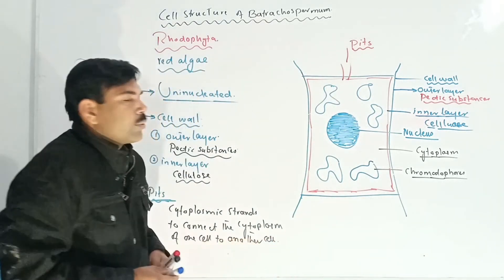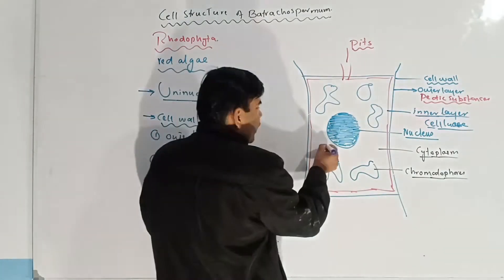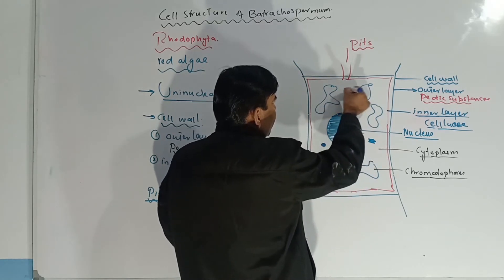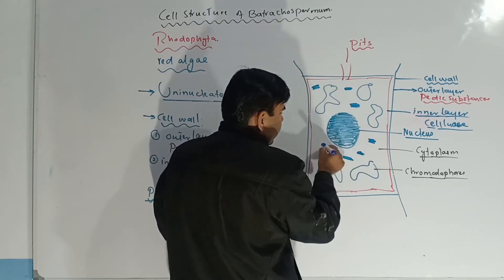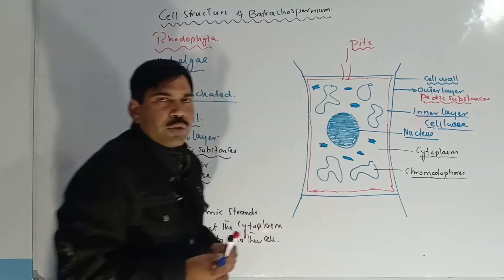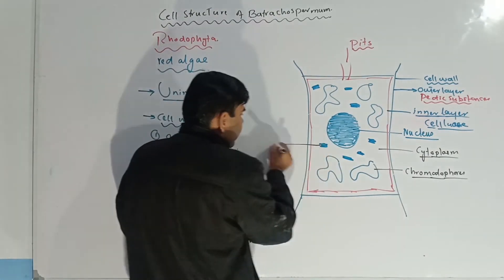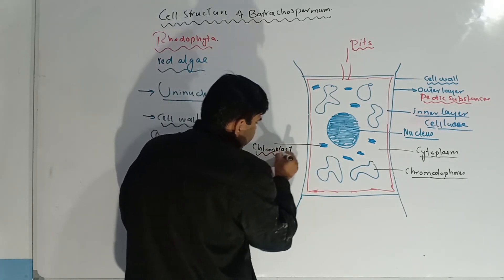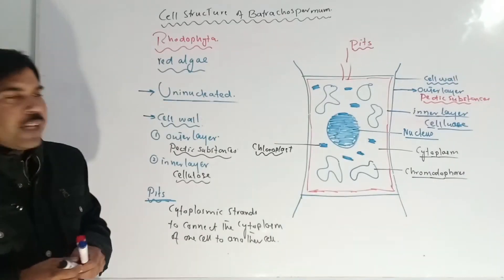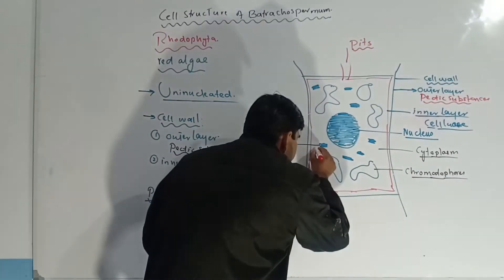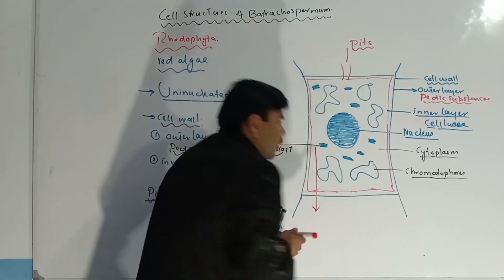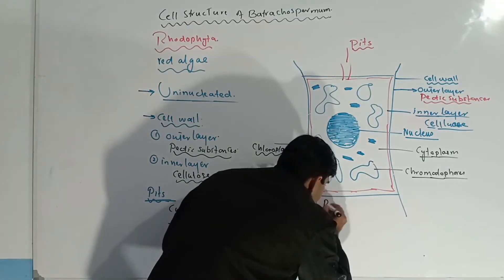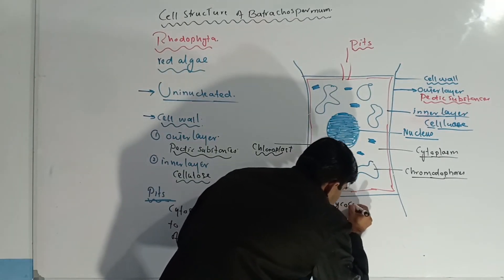Now we are going to discuss about the pigments — which type of pigments are present. These are the chloroplasts which are present inside the cytoplasm. The chloroplasts contain many pigments. The first pigment present is phycocyanin.